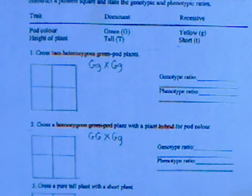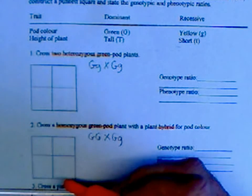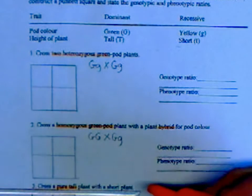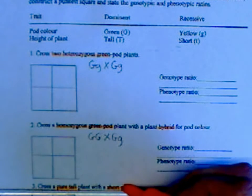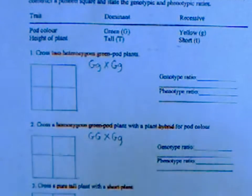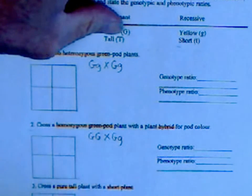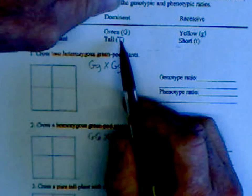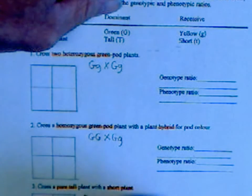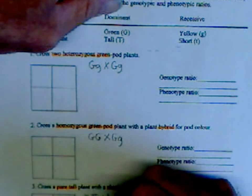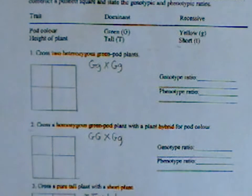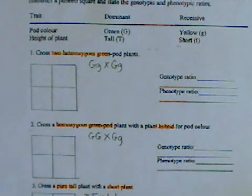Now the characteristic changes to height. We're crossing pure tall with short. Pure tall has to be two uppercase T's — the dominant allele. Pure short has to be two lowercase t's. Set up parent one and parent two for this Punnett square.